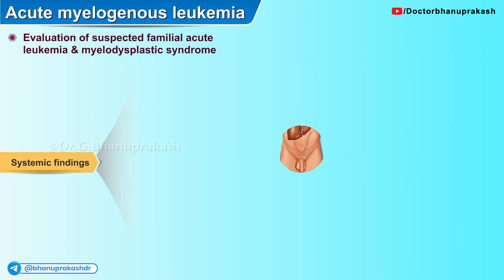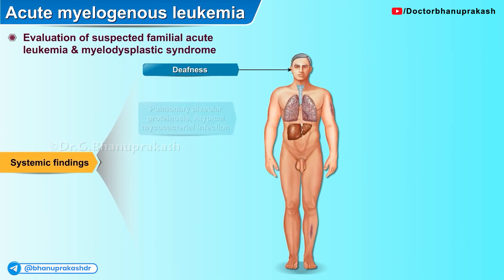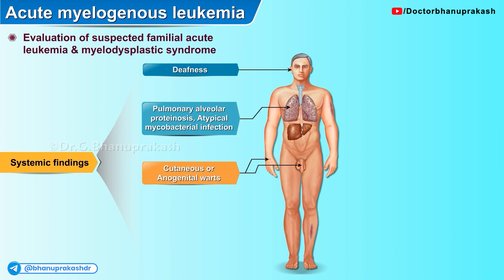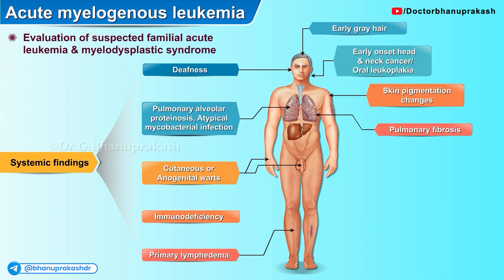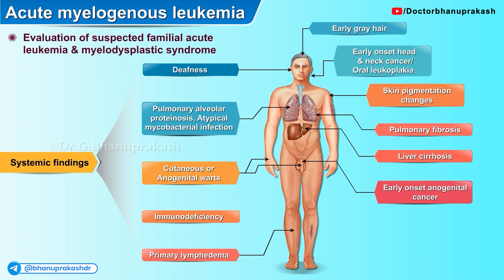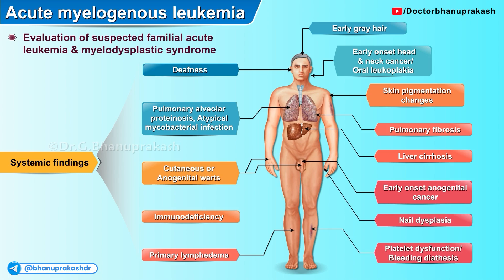Some of the important systemic findings include deafness, pulmonary alveolar proteinosis, atypical mycobacterial infections, cutaneous or anogenital warts, immunodeficiency, primary lymphedema, early gray hair, early-onset head and neck cancers, oral leukoplakias, skin pigmentation changes, pulmonary fibrosis, liver cirrhosis, early-onset anogenital cancers, nail dysplasias, platelet dysfunctions, or bleeding diathesis.